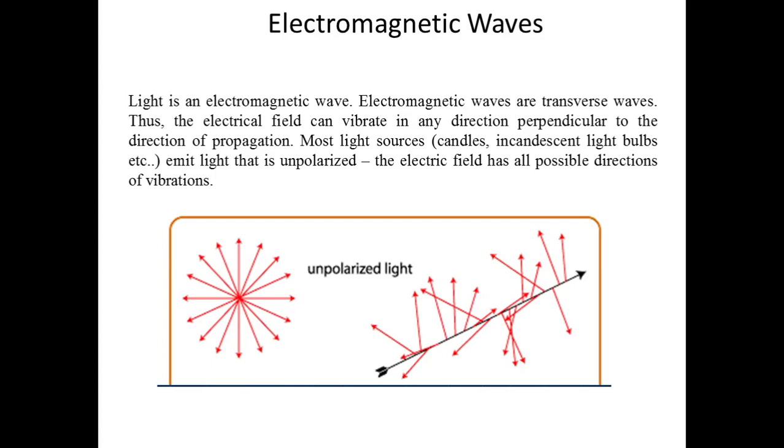First, let us understand what are electromagnetic waves. In electromagnetic waves there are two components: one is electric field and another is magnetic field, where the electric field usually aligns in the y direction and magnetic field is aligned in the z direction.